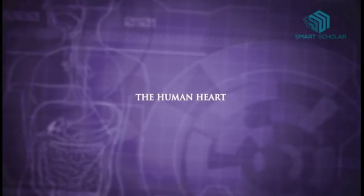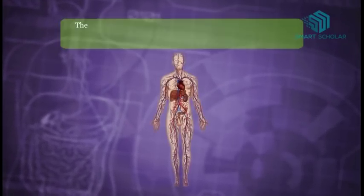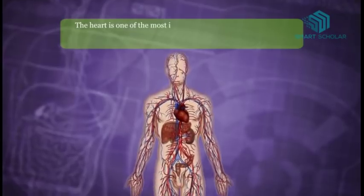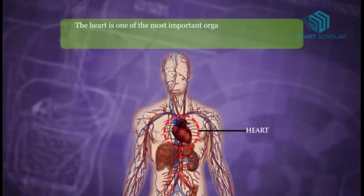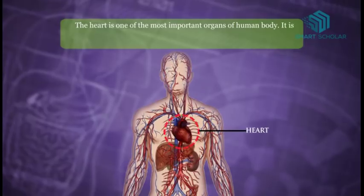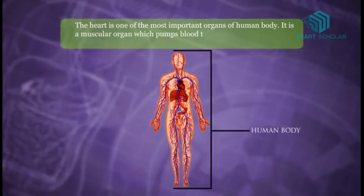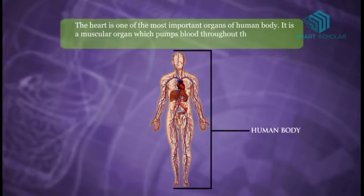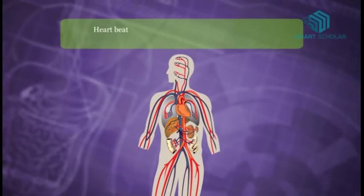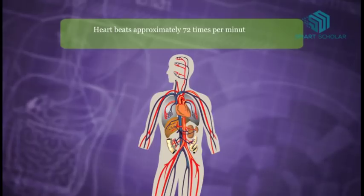The human heart. The heart is one of the most important organs of the human body. It is a muscular organ which pumps blood throughout the body. The heart beats approximately 72 times per minute.